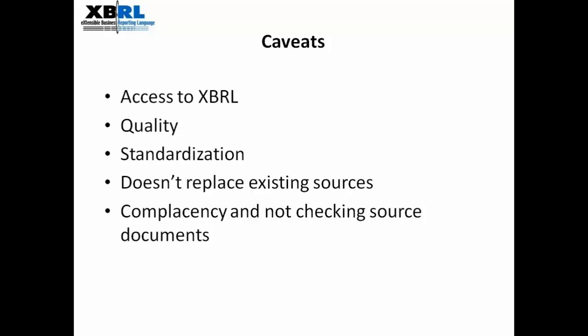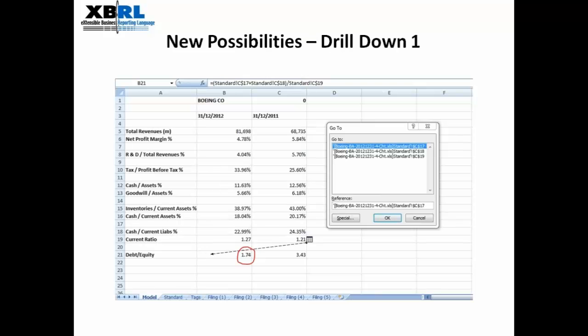There is a danger with XBRL to say, because it's the official data presented by the company itself, that it's going to be right and you don't need to check it or go back and see where it's come from. As I emphasised already, there are potential areas where the data may not be as you expect it to be. So you need to guard against complacency. There has been some research done to suggest that people start to think this data is absolutely fine, so they don't bother to check it from where it's come from.